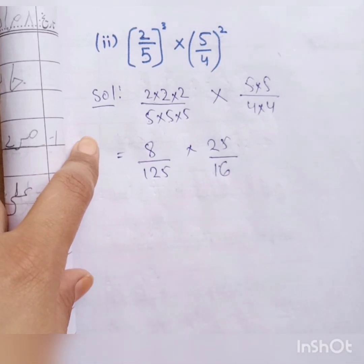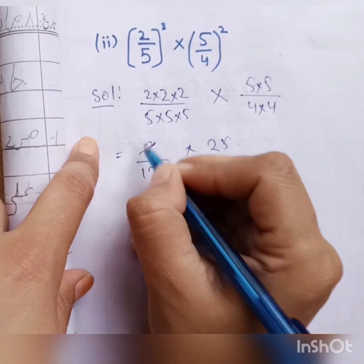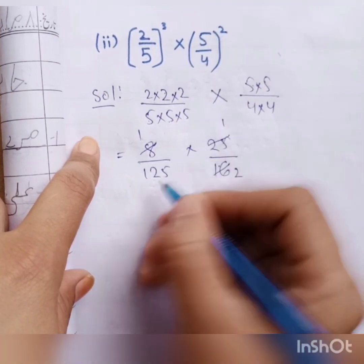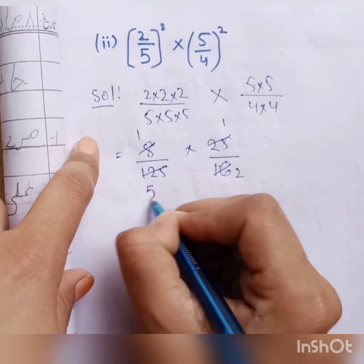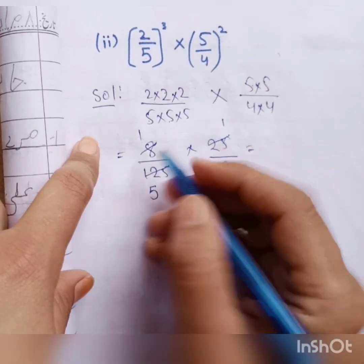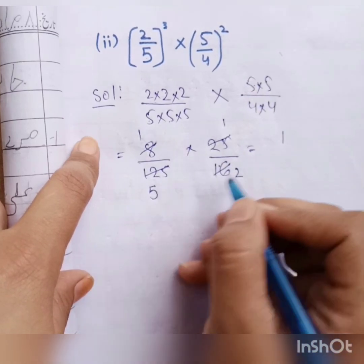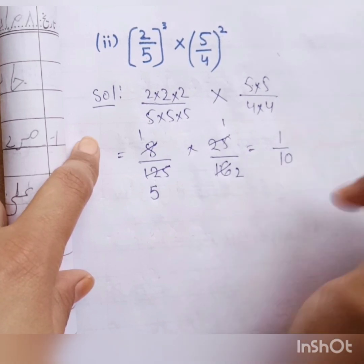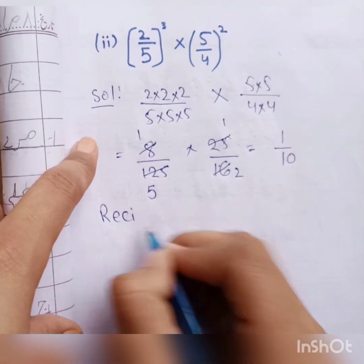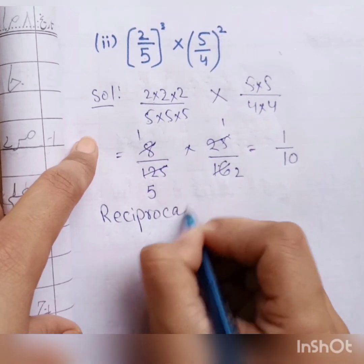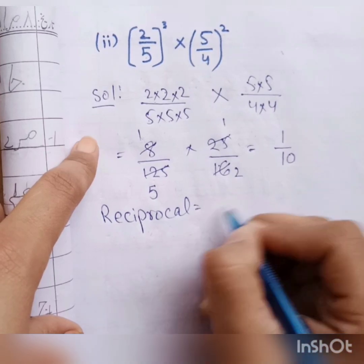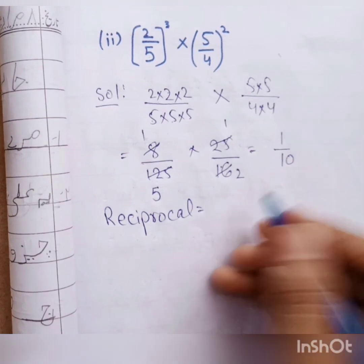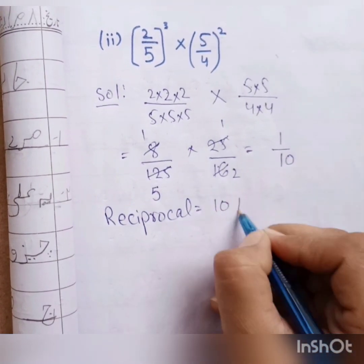Now we can see cutting is happening here. 8×2=16 and 16÷8=2; 25×5=125. So we have 1 multiply by 1 = 1, and 5 multiply by 2 = 10. We get 1 by 10. We take the reciprocal of 1 by 10 — denominator becomes numerator and numerator becomes denominator — so the answer is 10.